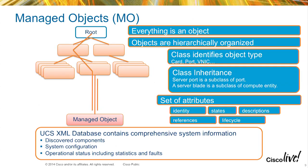A little bit about the XML model: everything in the system under the covers is an XML managed object. Everything from a physical perspective — the physical blades, the adapters, the individual memory DIMMs or CPUs — all modeled out in a hierarchy. There's another branch with all the logical configuration: your service profile definitions, the way that your virtual NICs or your virtual HBAs are configured.